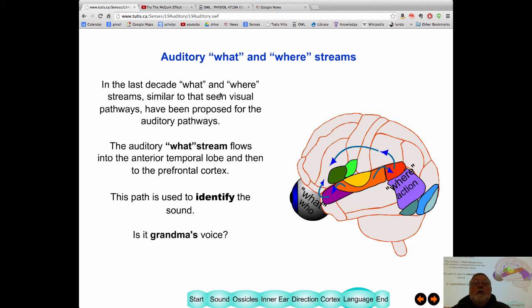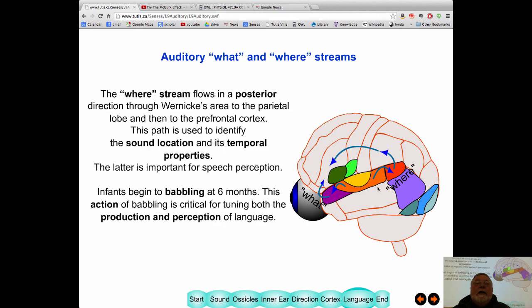In addition, there is a what and where pathway to this hearing. The what stream goes forward to the anterior part of the temporal lobe and then across to Broca's area. The where stream goes back to Wernicke's and then forward towards Broca's area. In the what stream, what the what stream does is identify the sound. So, is this a sound that Grandma's producing? If you're looking at the where stream, it's worried about all the rest of the qualities of the sound, its location and its temporal properties, the frequency. And that's, of course, what you need to detect what word is being spoken.